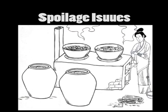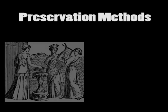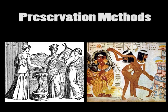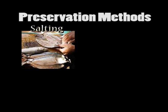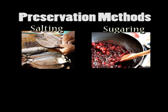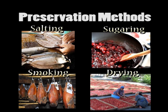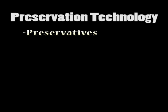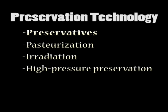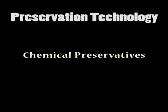Food spoilage has been an issue for humans for a very long time. Ancient Romans and Egyptians used basic methods of preserving foods, such as salting, sugaring, smoking and drying in order to keep them from rotting. With the development of science and technology, we have discovered more effective techniques of preserving food, in particular the development of chemical preservatives.